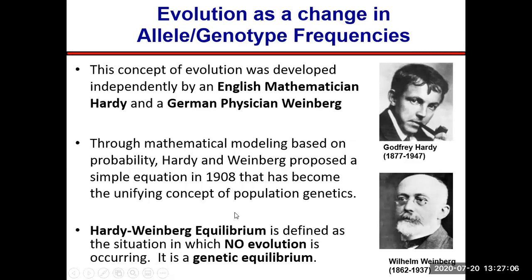The two pioneers in population genetics and the study of evolution are an English mathematician named Hardy and a German physician named Weinberg. Because it was so difficult to study evolution, these two scientists, working independently, came up with the exact same mathematical conclusions around the same time. What they came up with — a mathematical proof — is known as the Hardy-Weinberg equilibrium.